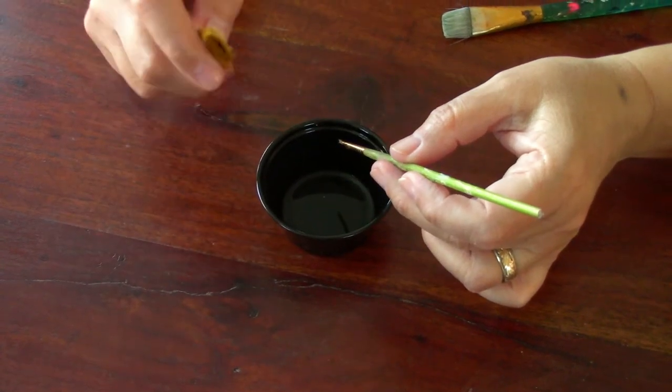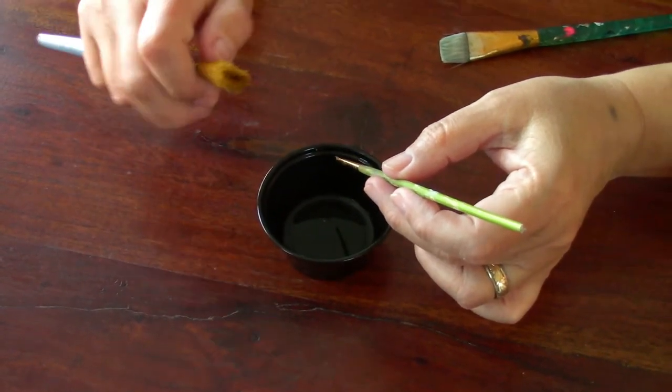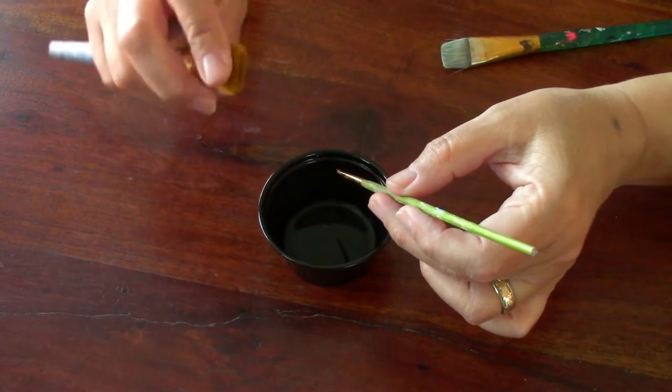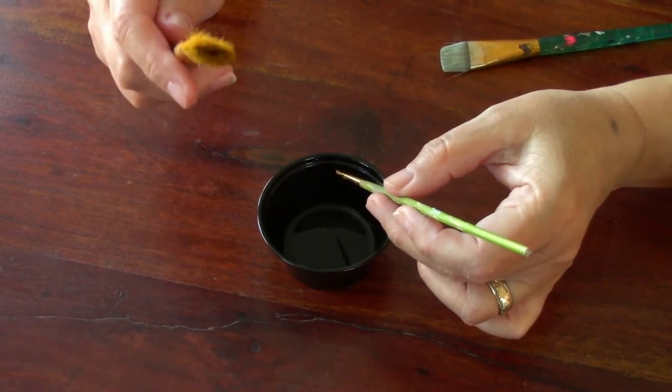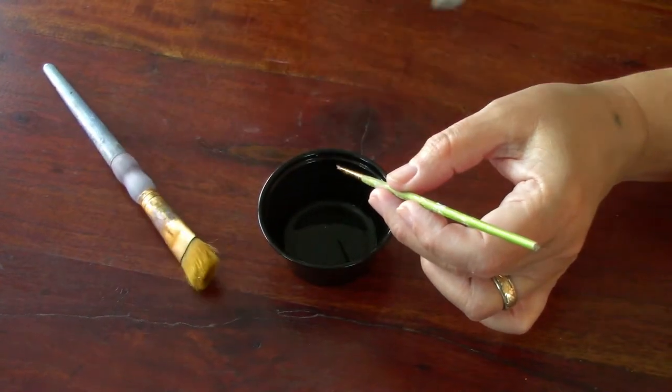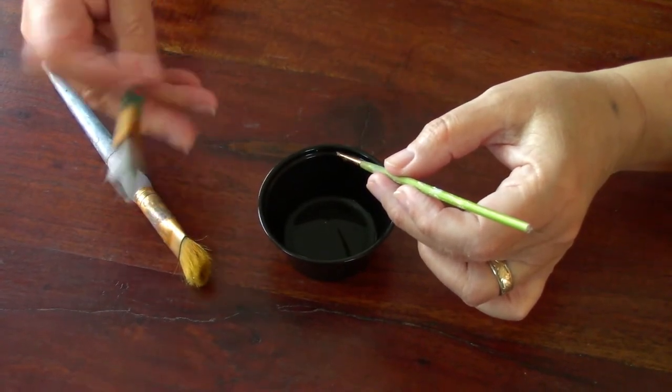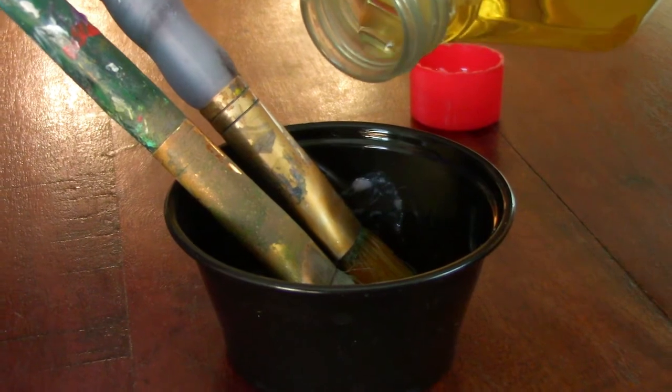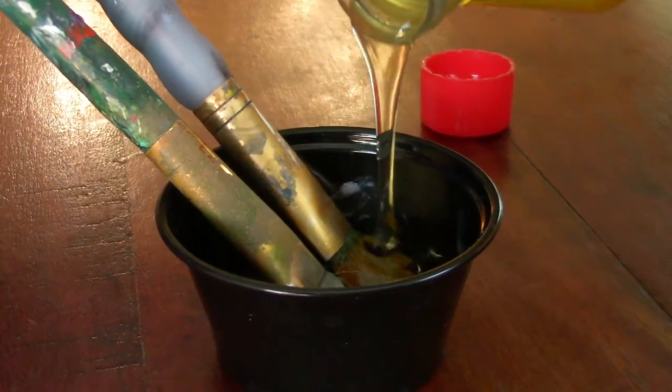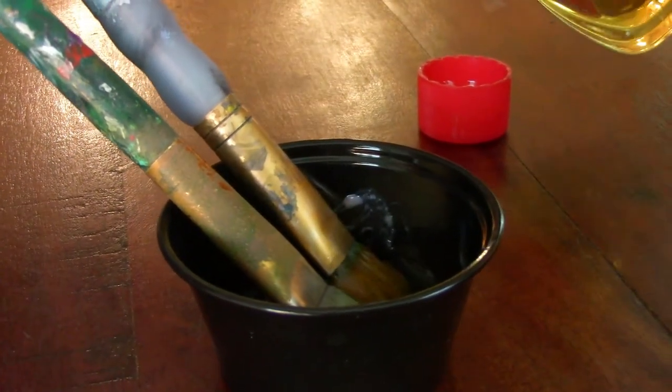If you have dry acrylic paint in your brushes, if you forgot to clean the paint after you finish painting with your acrylics, this is a really good solution. This brush is totally stiff with old paint all dried out. We are going to be cleaning it.